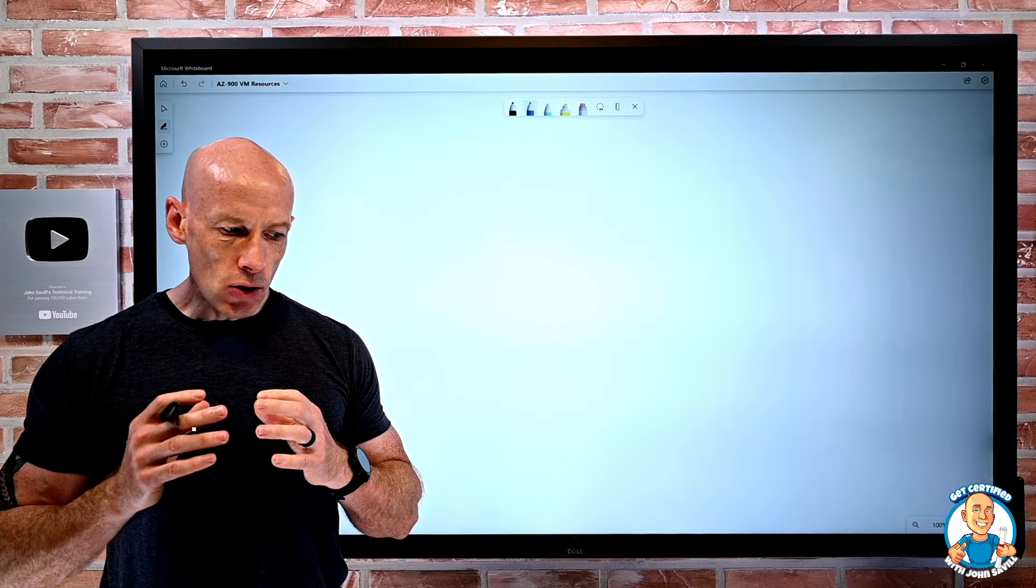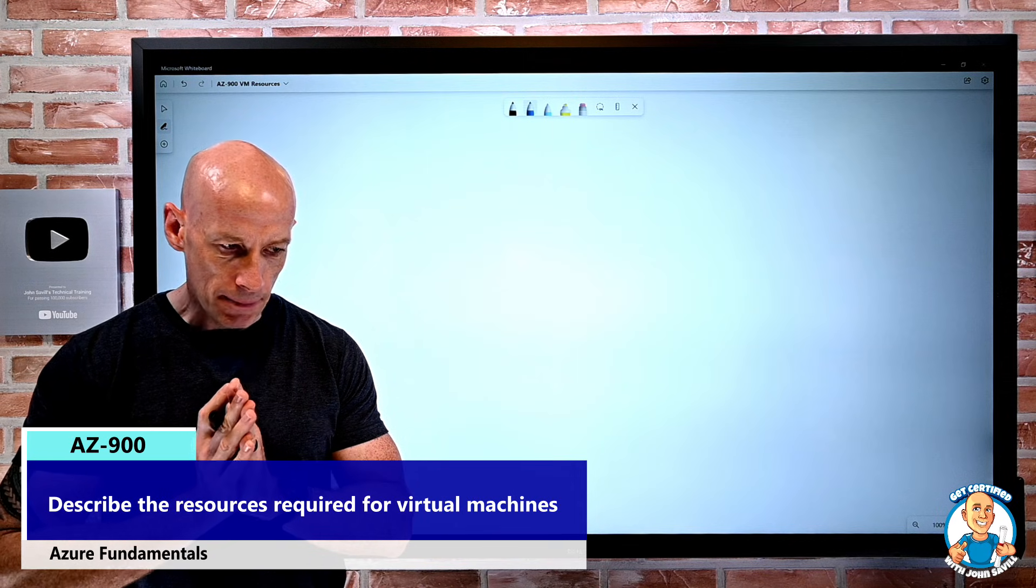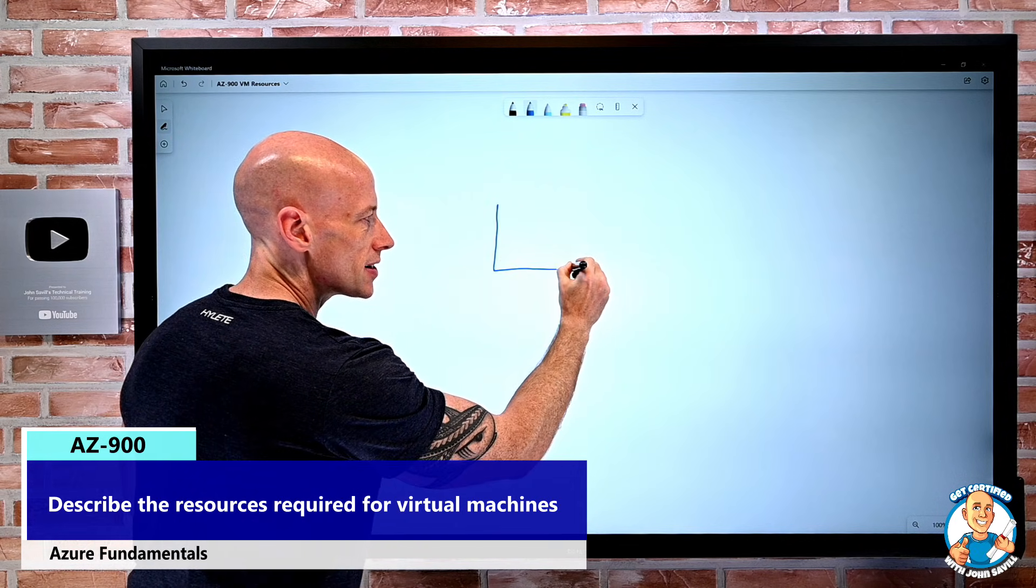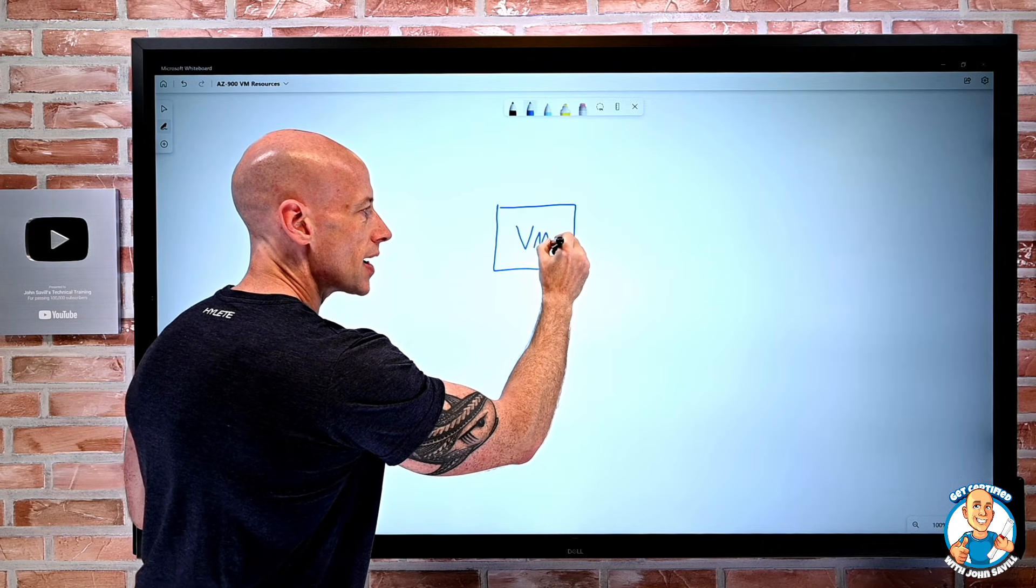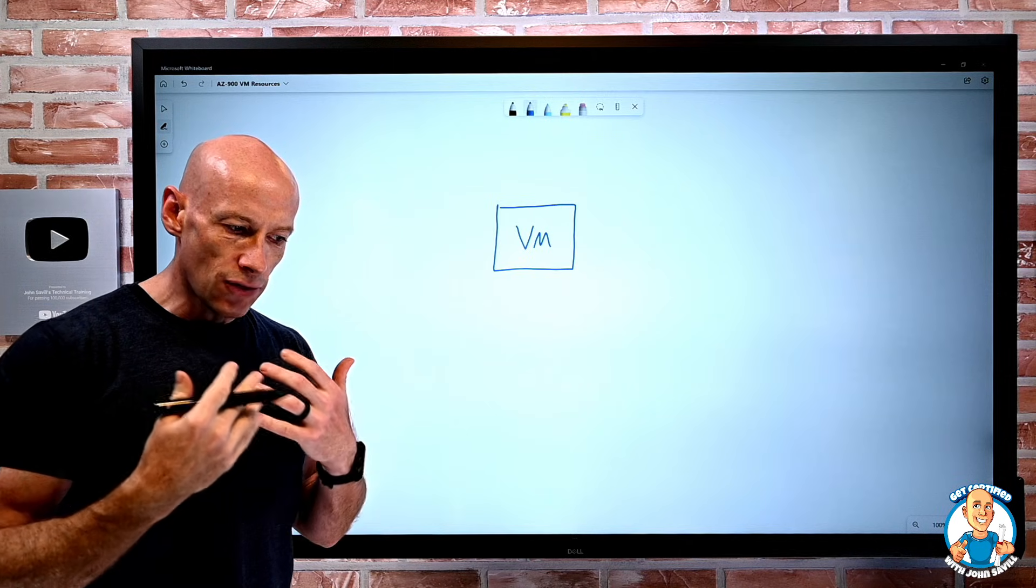In this lesson we're going to look at the resources required for a virtual machine. Now we often think about the virtual machine resource. This one seems fairly obvious. We pick a certain skew, a certain size, and we have that actual resource in Azure that is the virtual machine.